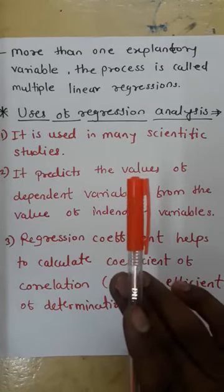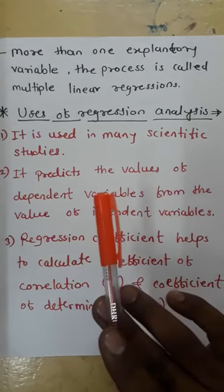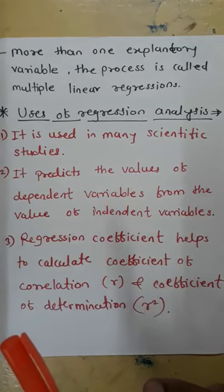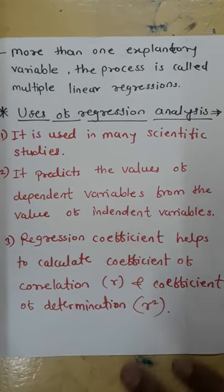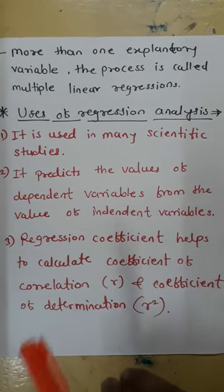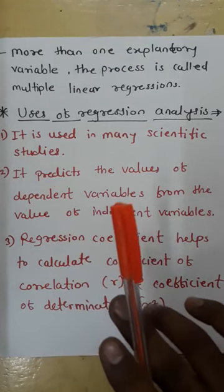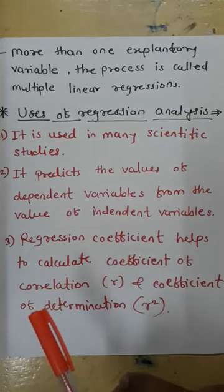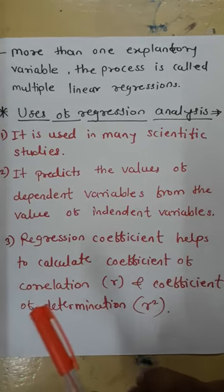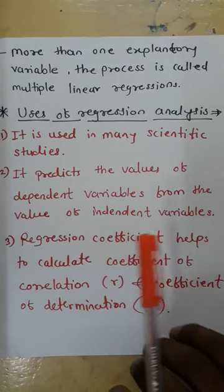When there is more than one explanatory variable, the process is called multiple linear regression.